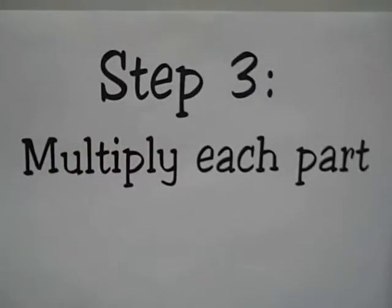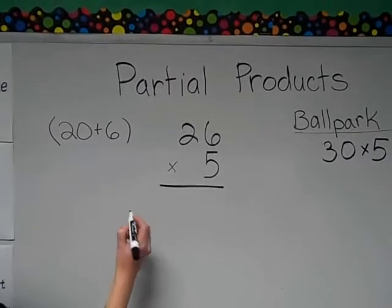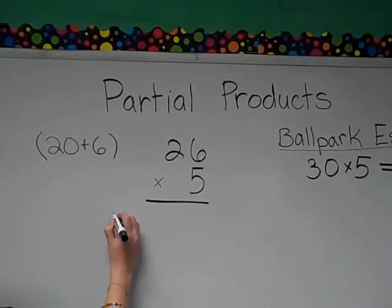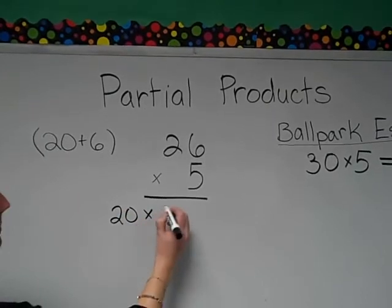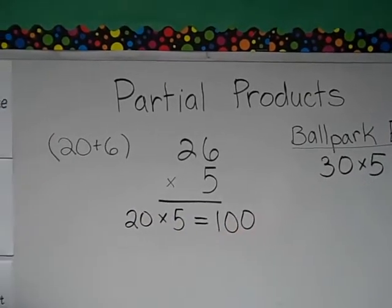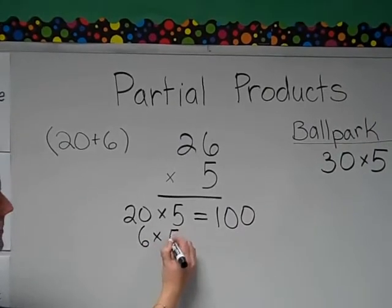Step three: multiply each part. Multiply each part of 26 by 5. To begin with, 20 times 5 equals 100. 6 times 5 equals 30.